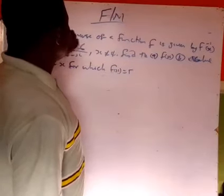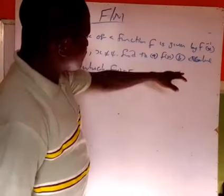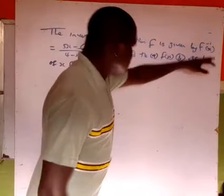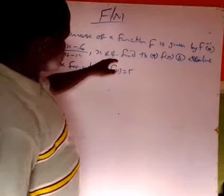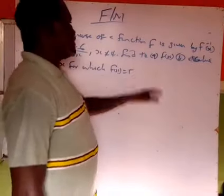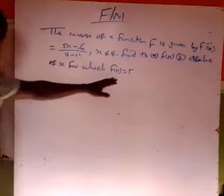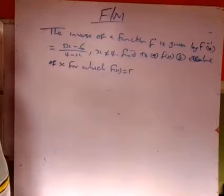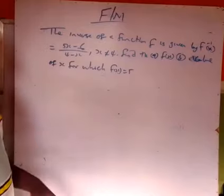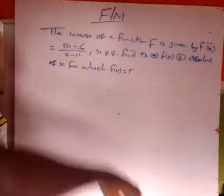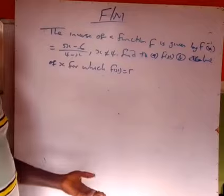Here you have the inverse of the function f, given by this expression when x is not equal to zero. Find the function f(x) and the values of x for which f(x) equals five. What they give you is the inverse of a function, so you have to find the original function back — it's vice versa.